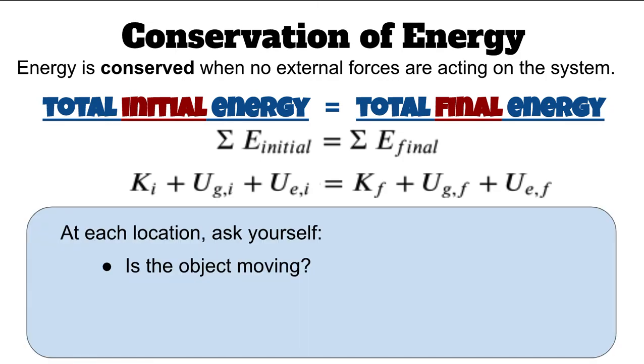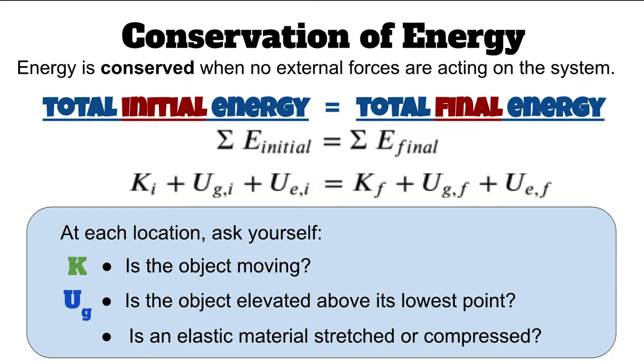At each location, you're going to want to ask yourself, is the object moving? If the object is at rest, then it has no kinetic energy. But if it has motion, if the problem talks about it having a speed and so forth, then we're going to consider it to have some kinetic energy, one half mv squared. And then in terms of its vertical position, if it's elevated above its lowest point, then we want to consider it to have a gravitational potential energy. We can make the choice of calling the lowest point the zero point, if we choose to, and then have everything else measured from that point. And then the last question we want to ask is, is there some sort of elastic material like a spring or a rubber band that's being stretched or compressed? And if it is being stretched or compressed at that moment, if it's not relaxed, then there will be elastic potential energy.